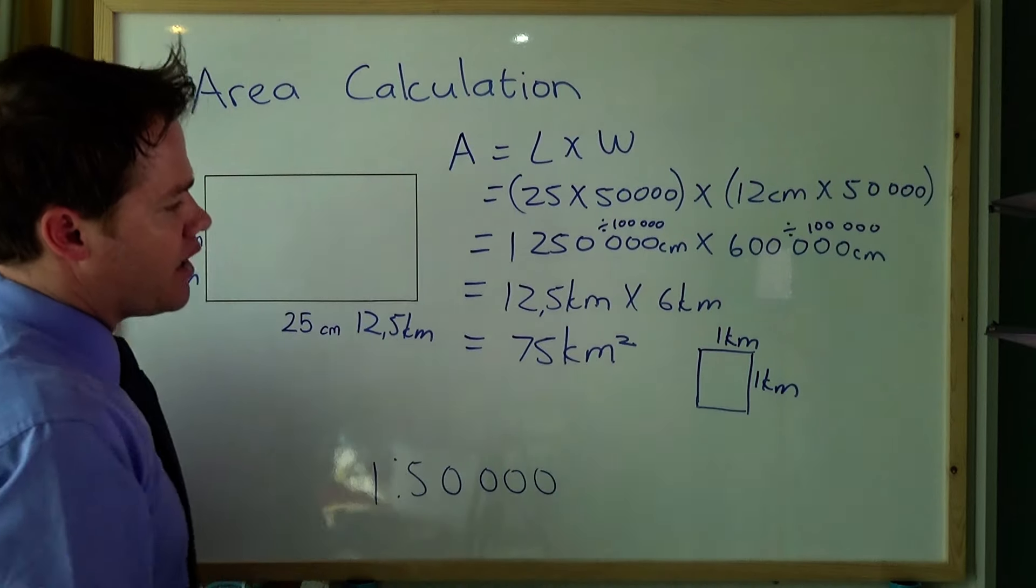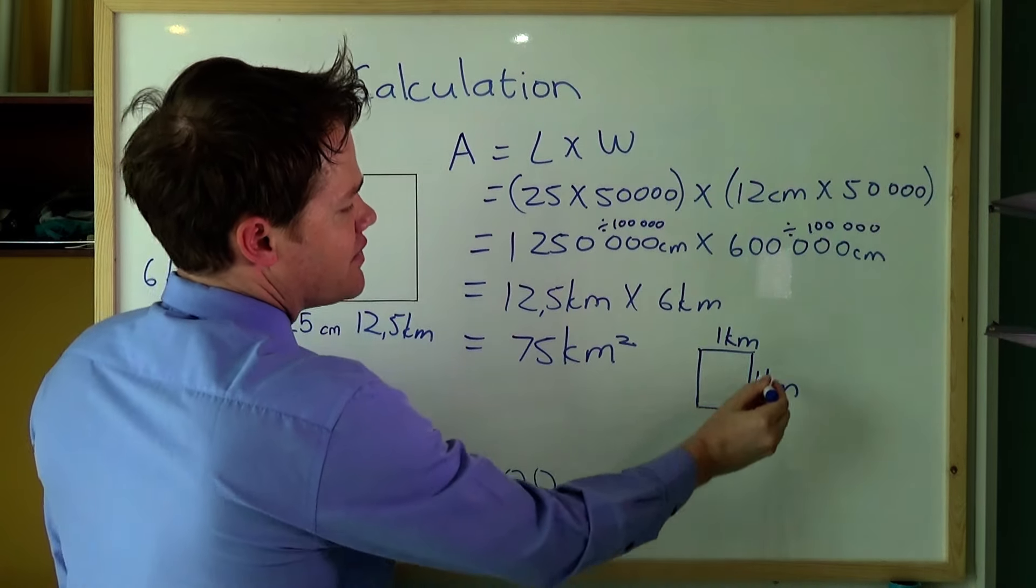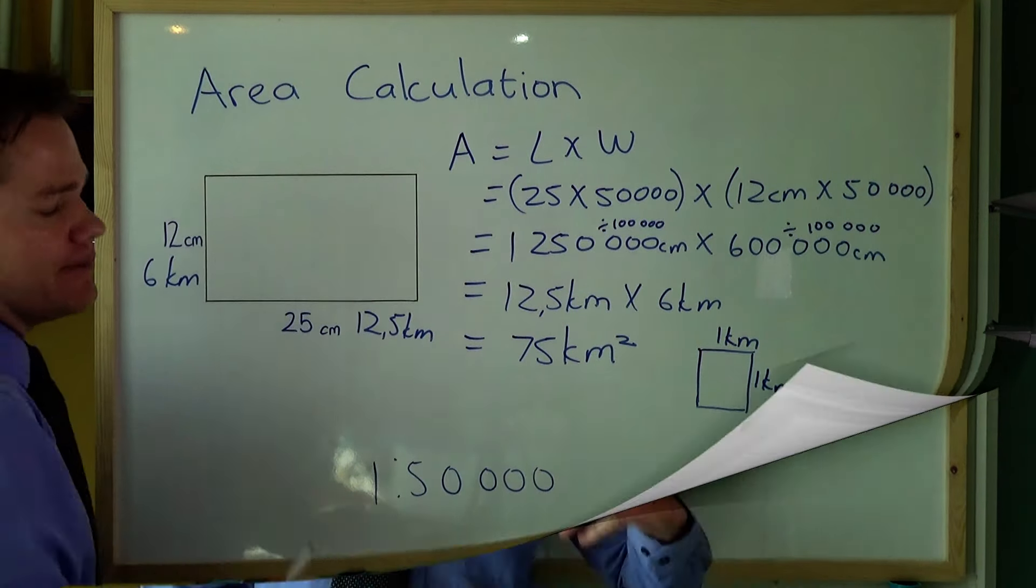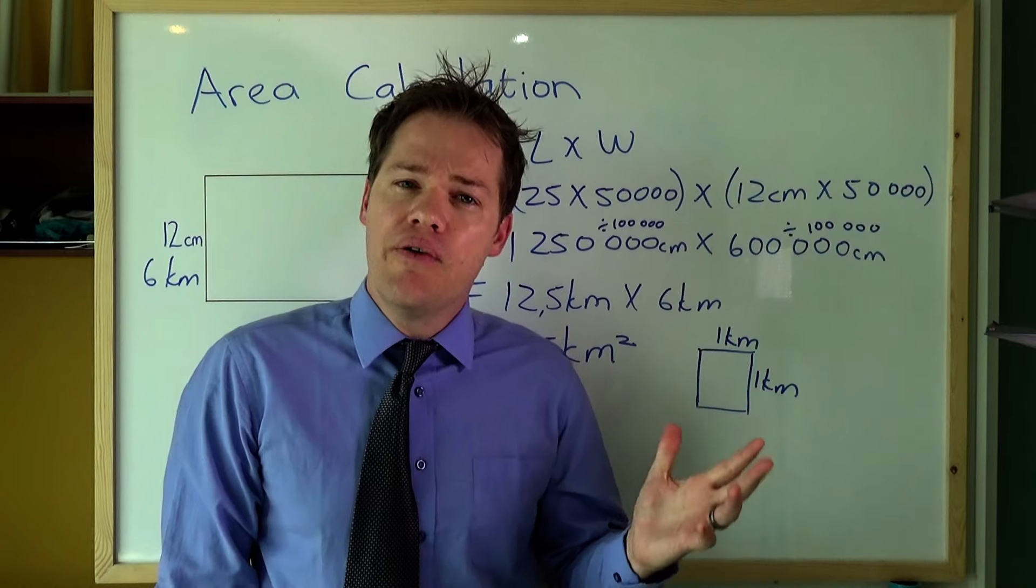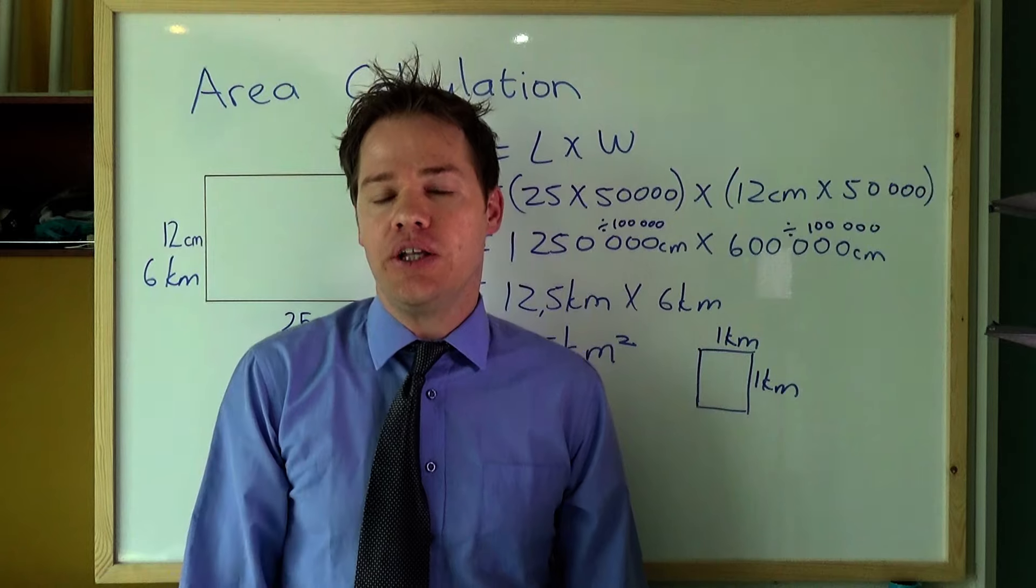So when we say the area of this place here is 75 square kilometers, it means 75 of these squares will fit into this area.